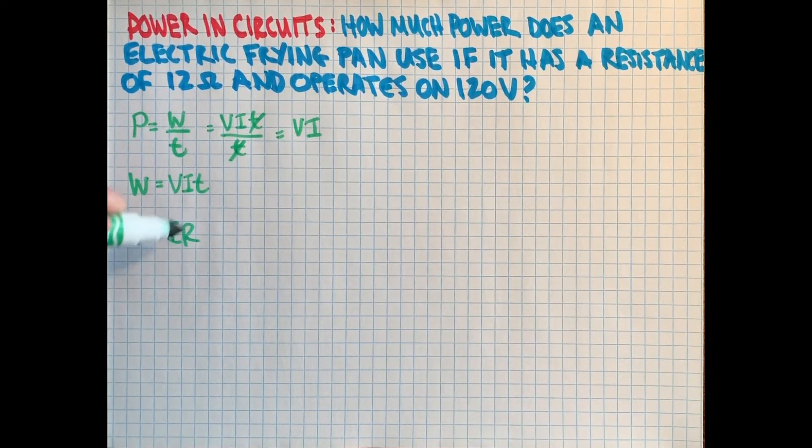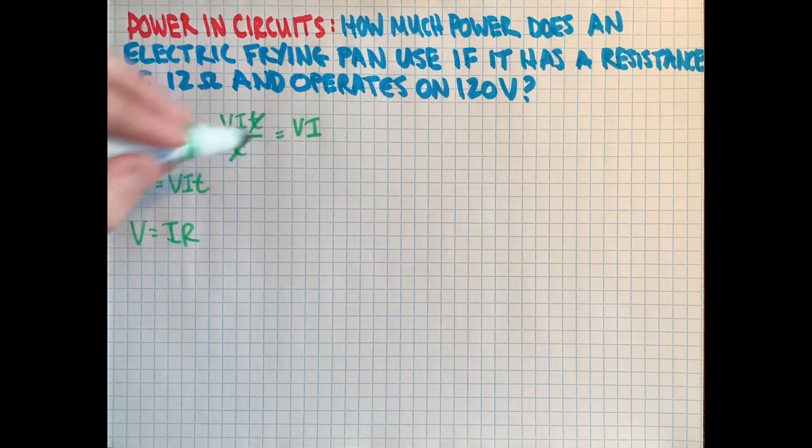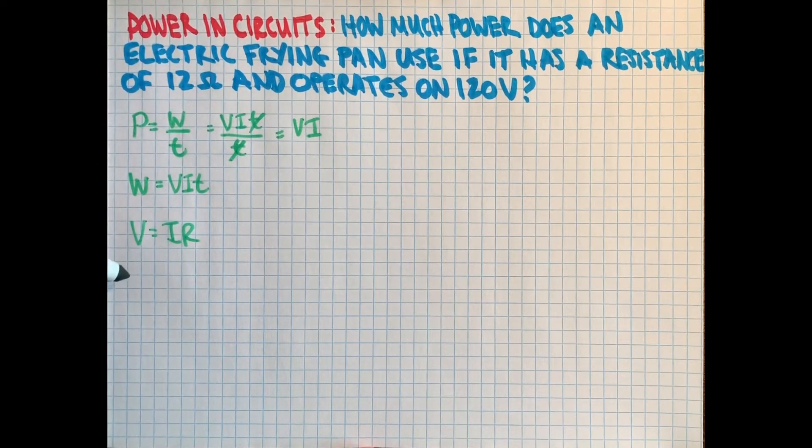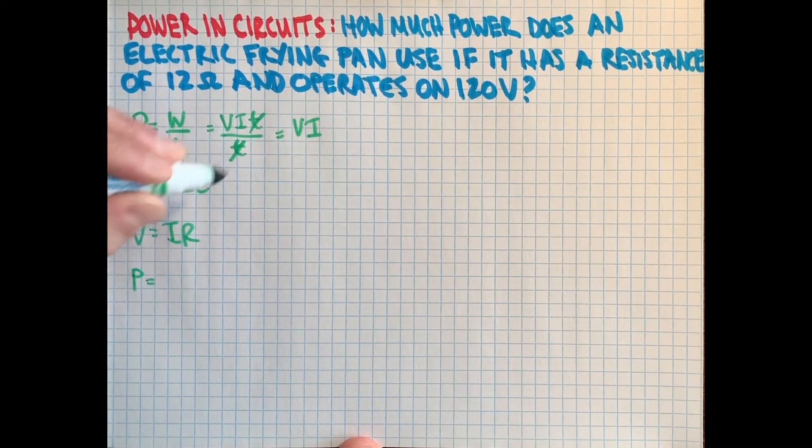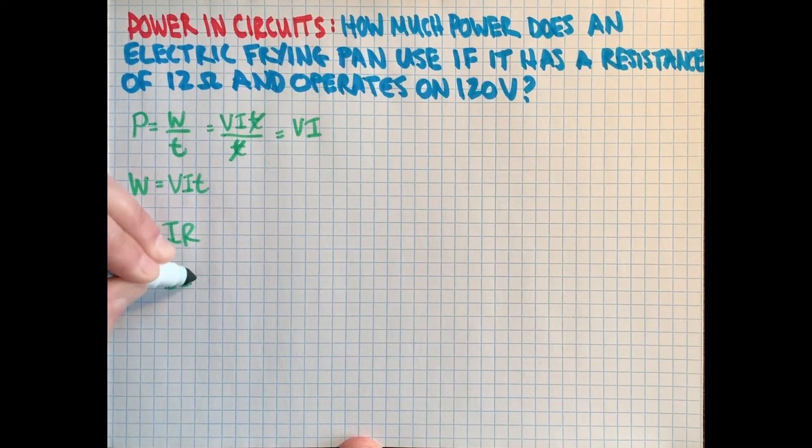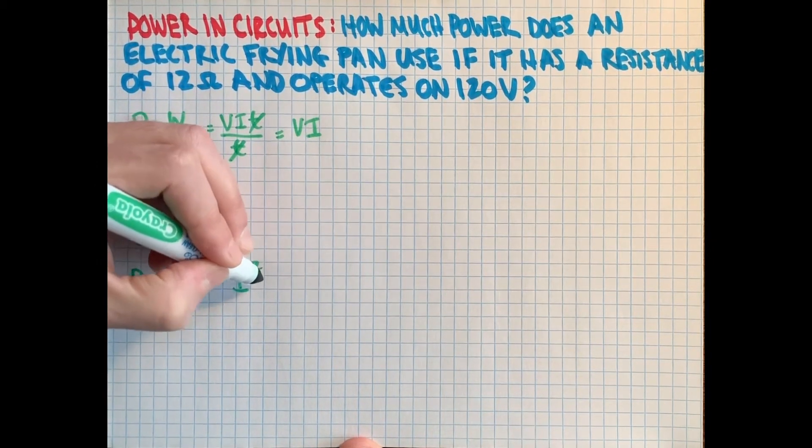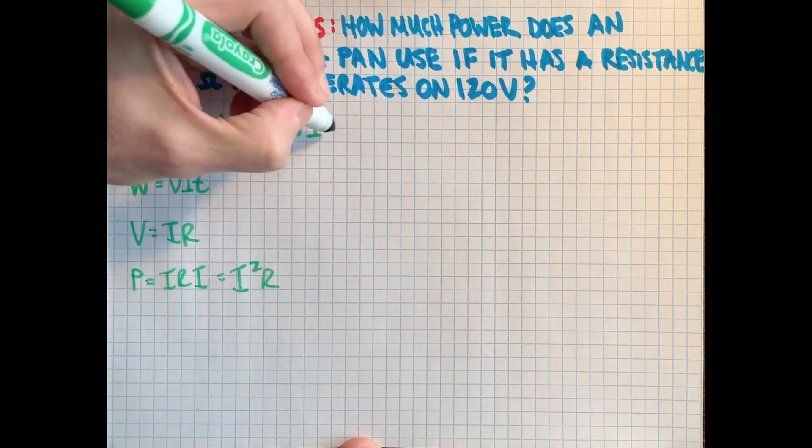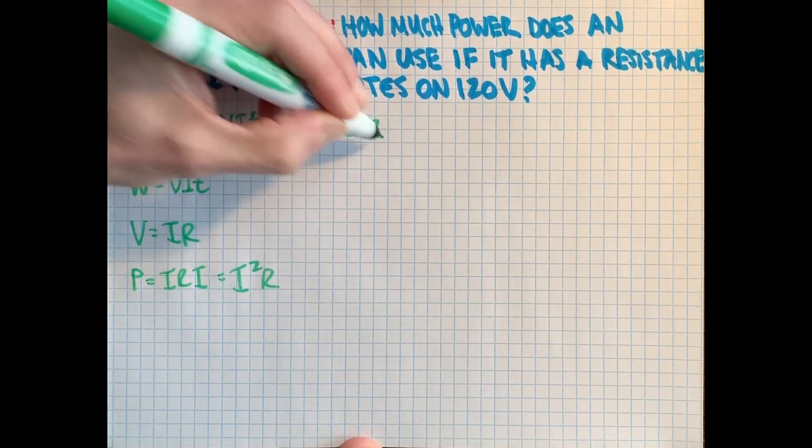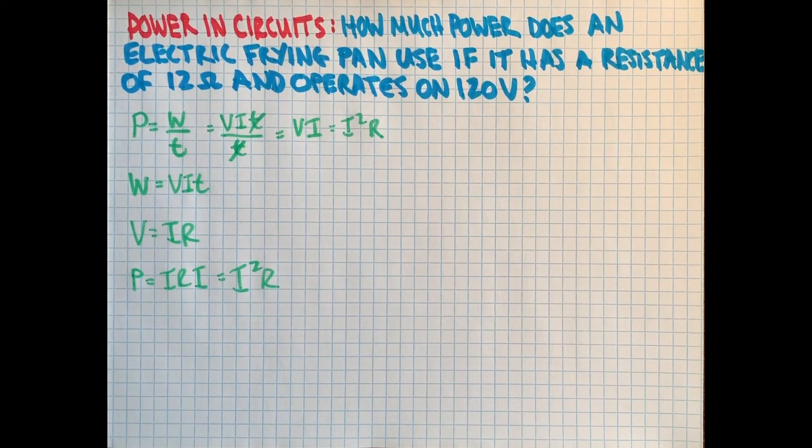And so I can take Ohm's Law here and say, instead of V, I'm going to put IR in there. And so I have a second formula. Power will be V in the form of IR times I, which is I squared R. And so we have a second version of the power formula for circuits here.